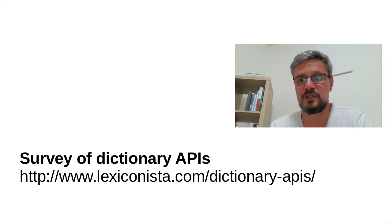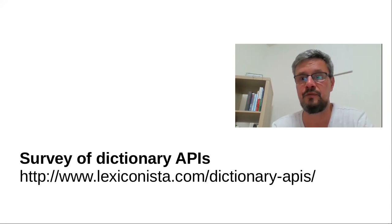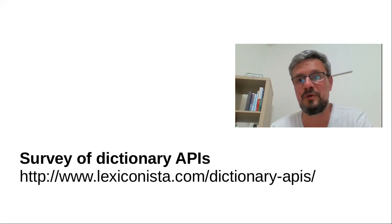That's pretty much the end of my presentation — that's all I wanted to say about dictionary APIs. One last thing: I've put up a page on my website listing all the APIs I've reviewed in this presentation, so you can look more closely at some of them. I plan to keep it updated in the near or mid-term future as the dictionary API landscape evolves. Thank you for your attention.